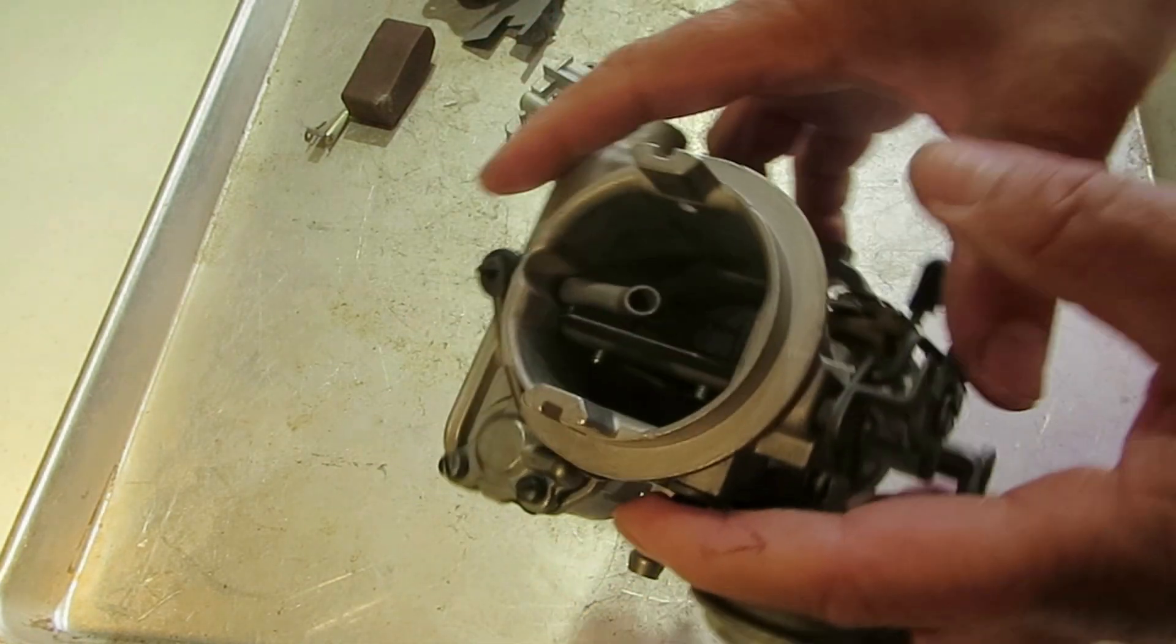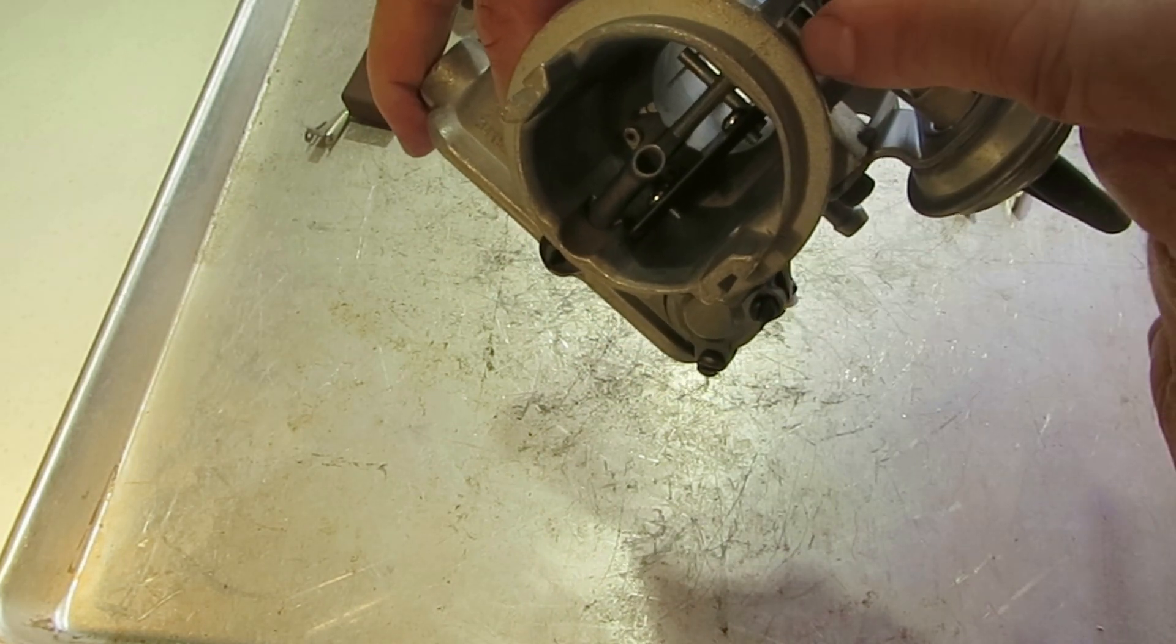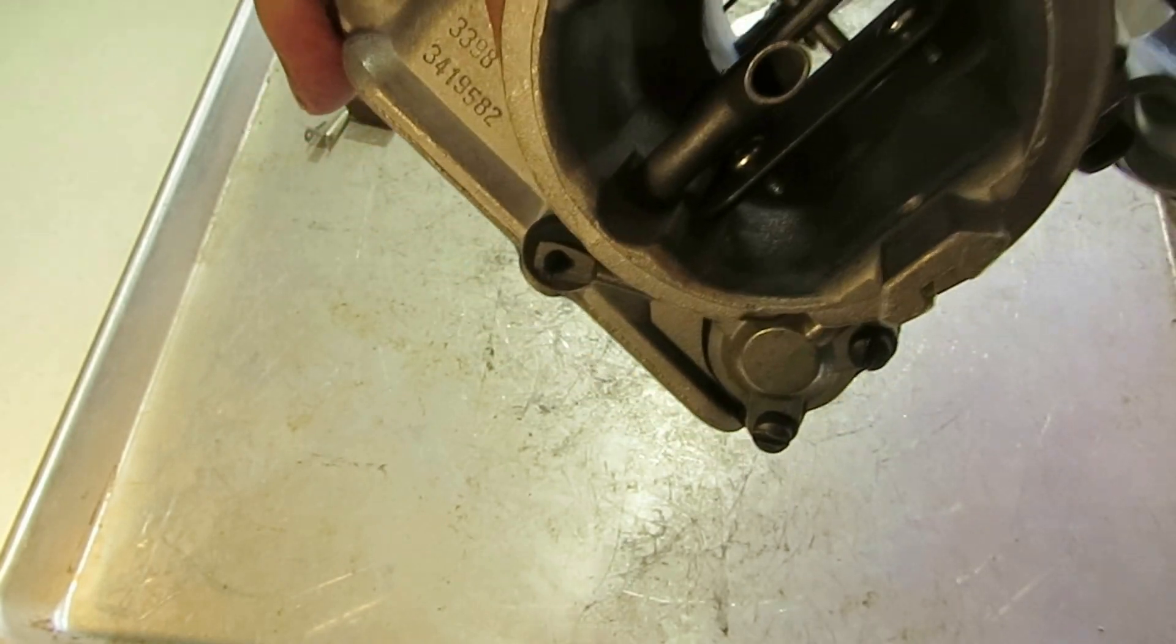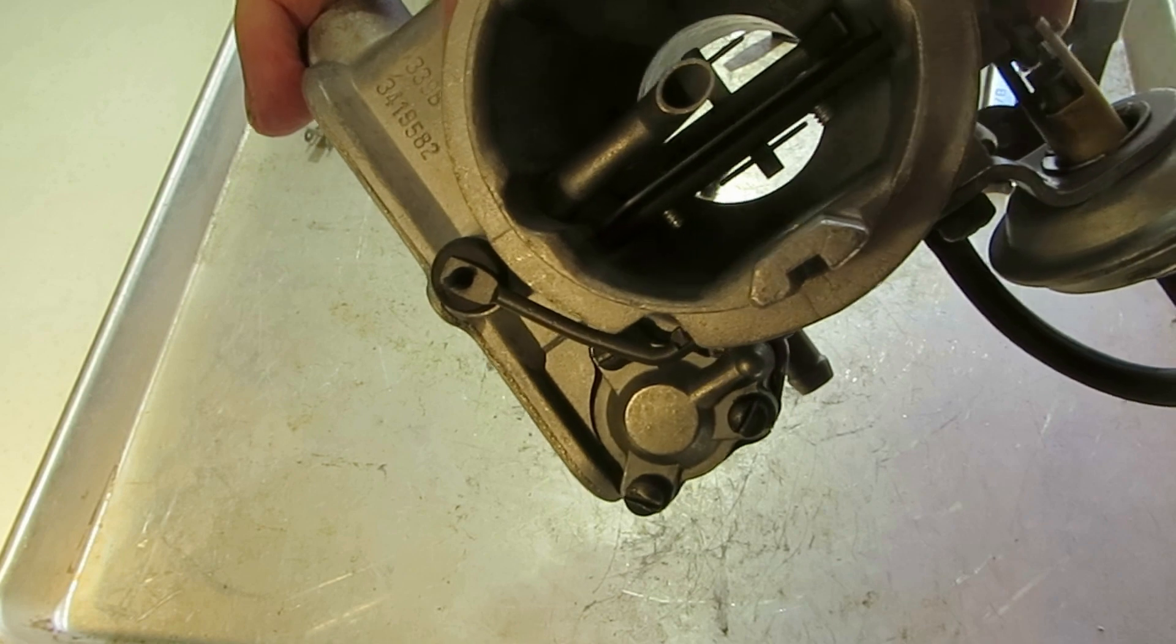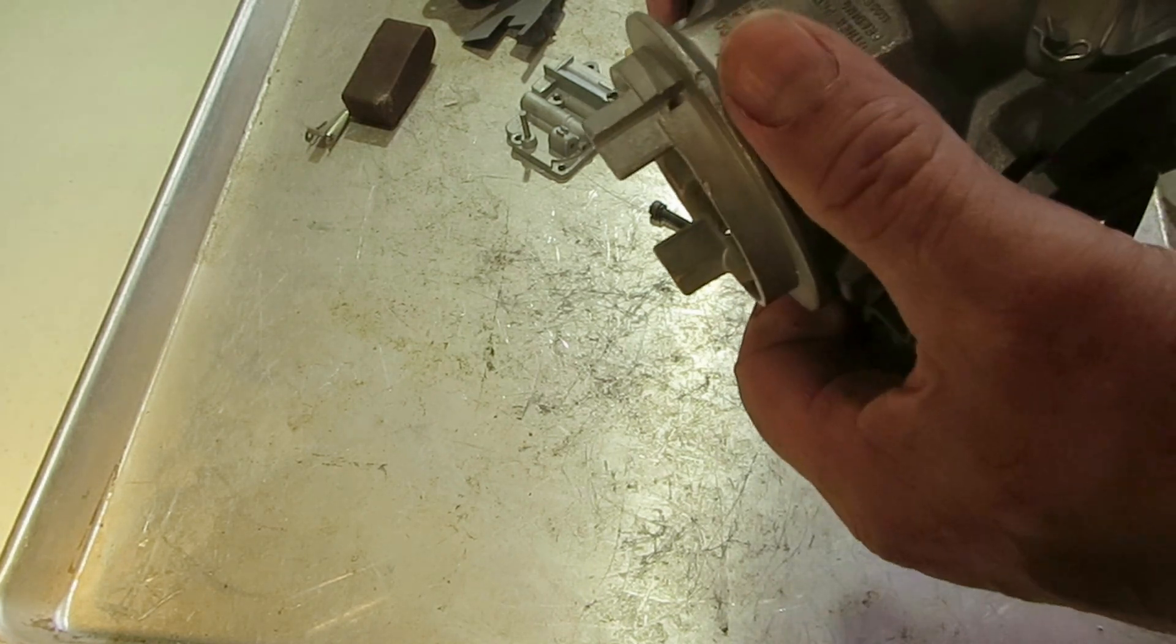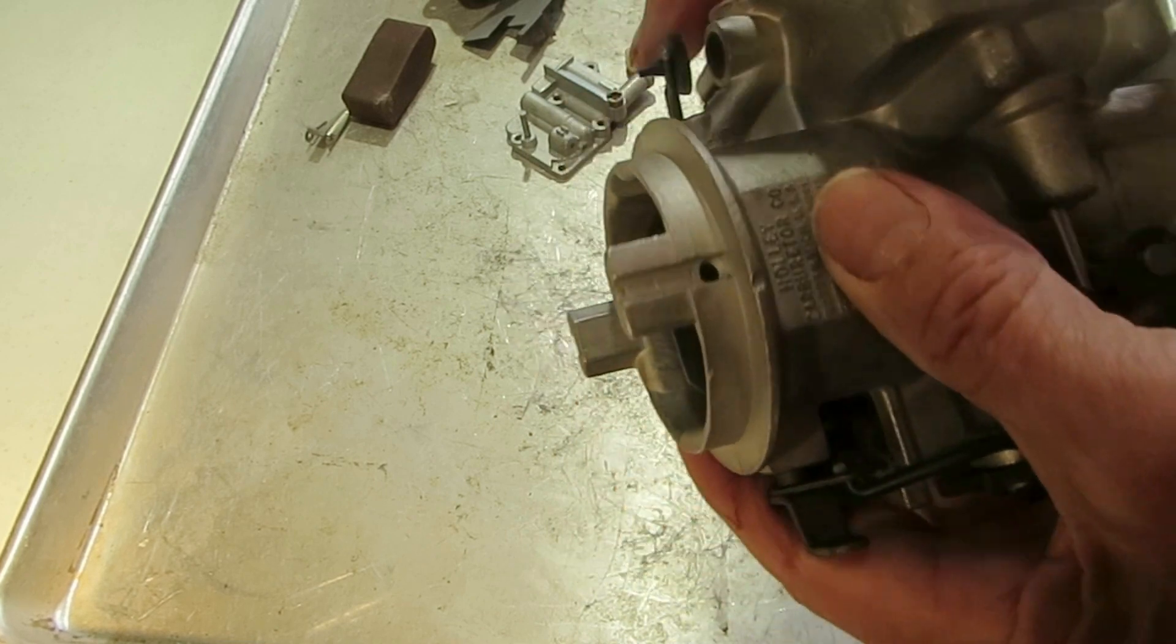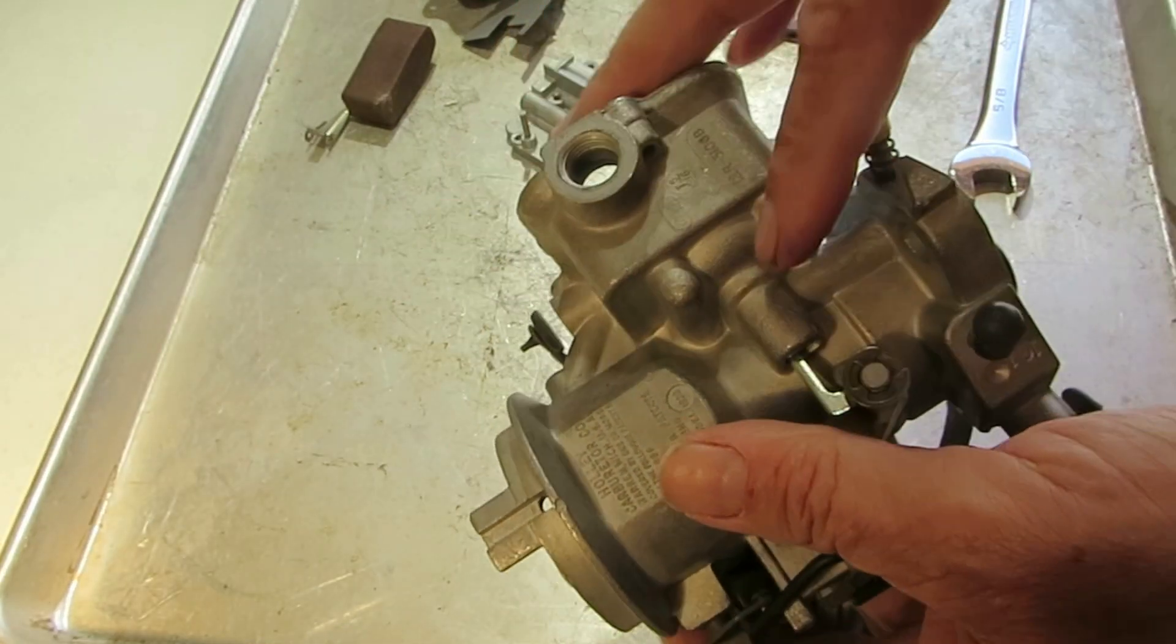Right down in there, you may or may not be able to see it, there's a little brass colored hole. It's about halfway down the carburetor throat, very small passageway. You need to be sure that's clean and clear, blow through it, make sure you can get air through it. That's where the air comes in to mix with the fuel, that's where you get air fuel mixture.